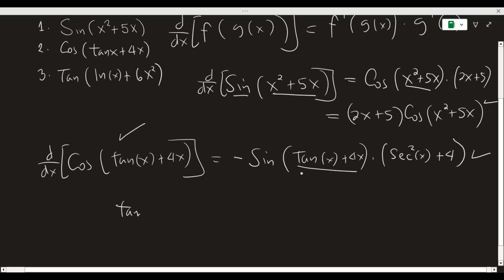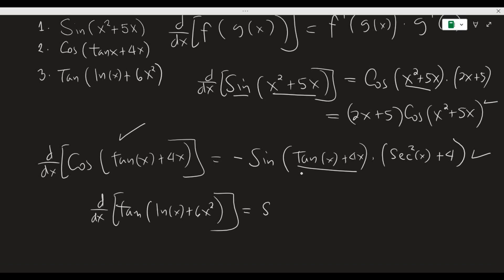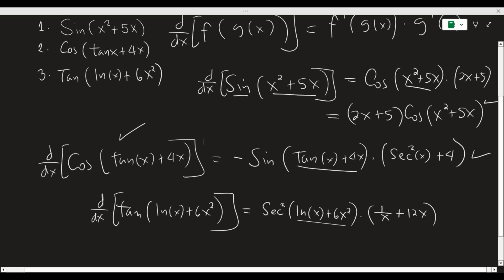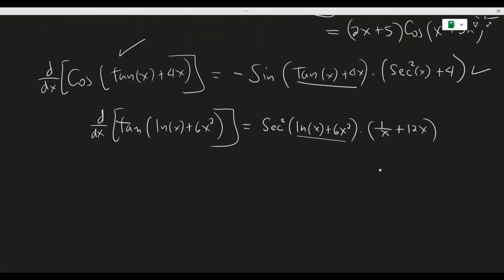Our third function is tangent of ln x plus 6x squared, and we need to find its derivative. The outside function here is tangent, and the derivative of tangent is secant squared. We keep the inside function unchanged — ln x plus 6x squared — and multiply it by the derivative of the inside function. The derivative of ln x is 1 over x and the derivative of 6x squared is 12x.